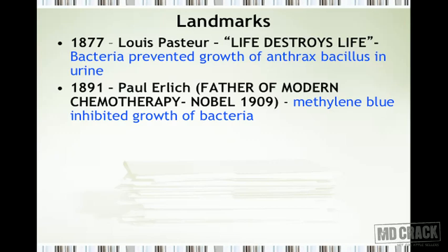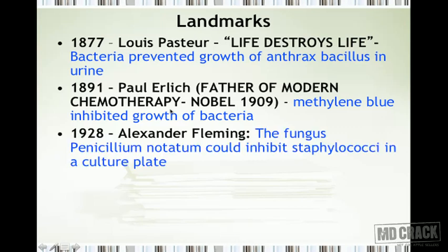In 1891, it was shown by Paul Ehrlich that methylene blue — a dye — inhibited the growth of bacteria. This was probably the first evidence that you could destroy bacteria by using a chemical substance. This is why Paul Ehrlich, who received the Nobel Prize in 1909, is called the father of modern chemotherapy. The next important landmark came in 1928.